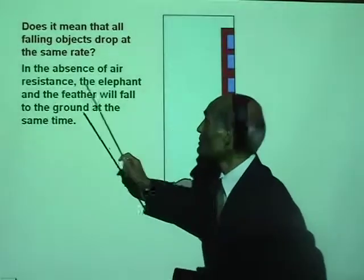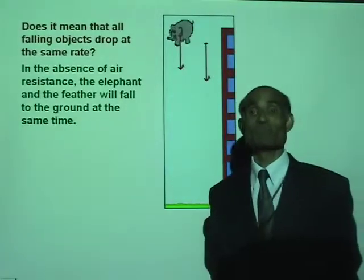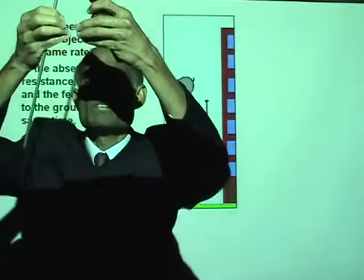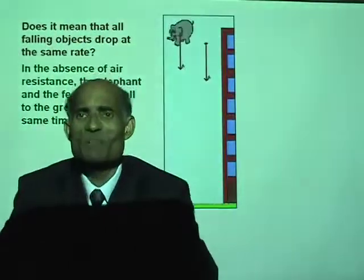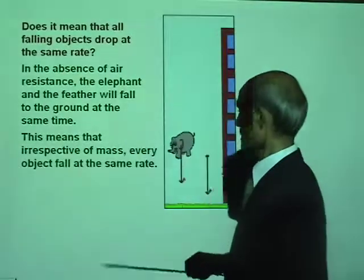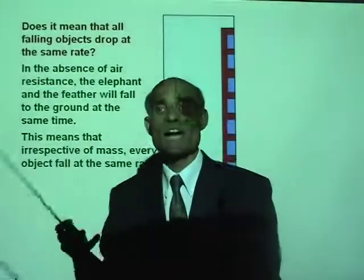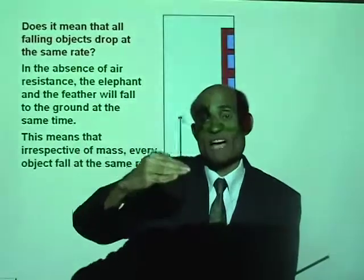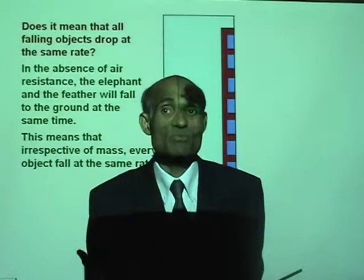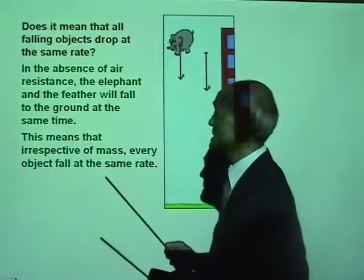In the absence of air resistance, the elephant and the feather will fall to the ground at the same time because they both have the same acceleration. Try it — take a small stone and a big stone, drop them from the same height, and see if they both fall at the same time. Irrespective of mass, every object falls at the same rate. Every falling object has the same acceleration — acceleration due to gravity, g — which is 9.8 meters per second squared.